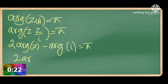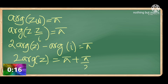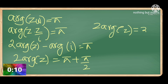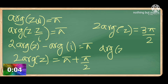We know that argument of i is π/2, therefore 2 times argument of Z equals 5 + π/2, which gives 2 times argument of Z equal to 3π/2, and hence argument of Z is equal to 3π/4.